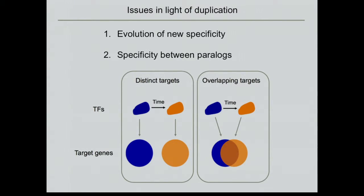We've had projects in both. The first is: if things are evolving by duplication and neofunctionalization or changes, how does that lead to the evolution of new binding specificities in transcription factors? We know that gene regulatory networks are a primary mechanism by which evolution and adaptation occurs. We've thought a lot about the cis side of it, but the trans side of evolution hasn't been studied as much. You can imagine a transcription factor with some target genes evolves to have very new target genes through duplication and neofunctionalization, giving new regulatory networks.